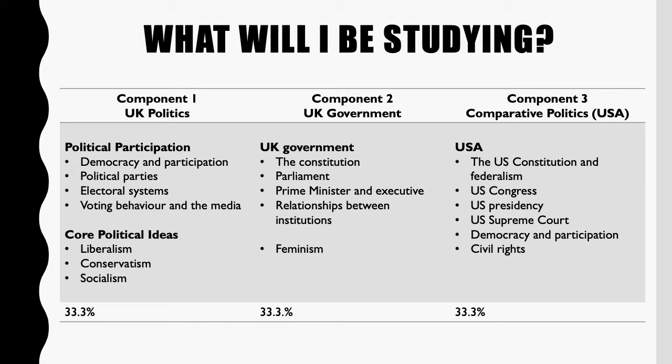Component Two is UK Government, studied in Year 12. We look at the constitution and the interplay between England, Scotland, Northern Ireland and Wales — who has what power. We examine Parliament, the Prime Minister and the executive, and the relationship between institutions including the EU. We also study feminism as another political idea, looking at the full spectrum of belief within it.